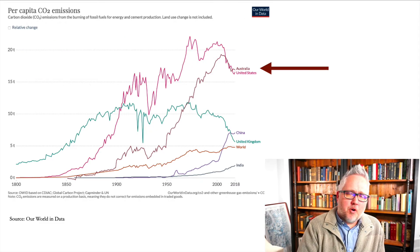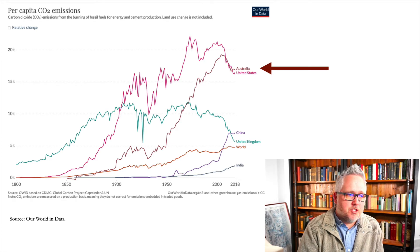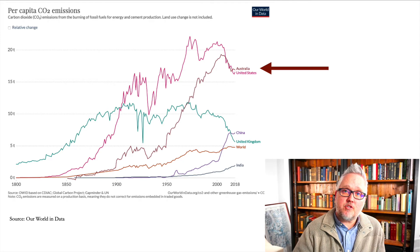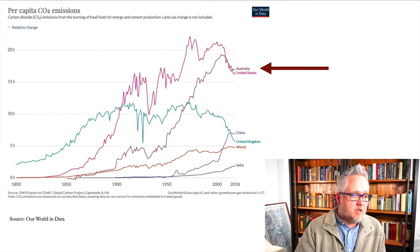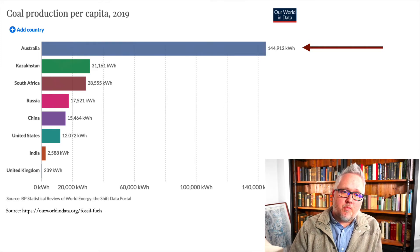Australia on a per capita basis was 17th for energy use, but in total per capita emissions it recently surpassed the U.S. The latest data I could find from Our World in Data for 2018 showed that Australia had briefly passed the U.S. a couple of years ago, and then in 2017 and 2018 on a per capita basis, Australia actually surpassed the U.S. On a per capita basis it's also dramatically higher than India, China, the U.K., and a lot of other countries.